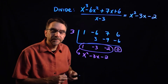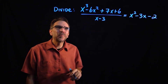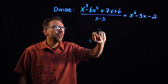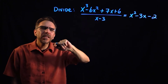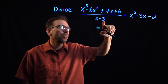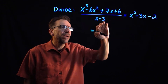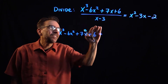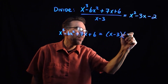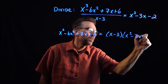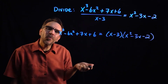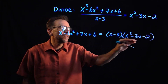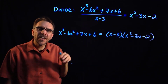We're done with the problem — there was no remainder. But here's something neat: if we cross multiply both sides by x minus 3, we get x minus 3 times x squared minus 3x minus 2. In a way, the synthetic division allowed us to factor the cubic — that's a bonus.